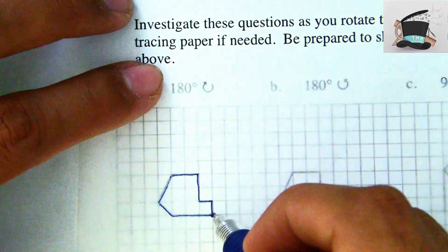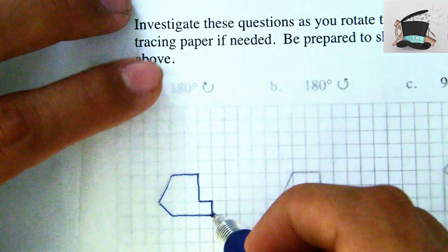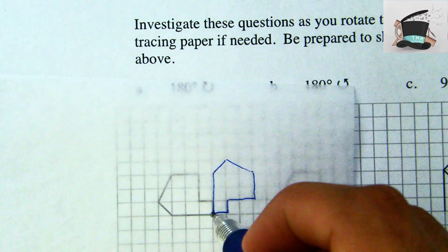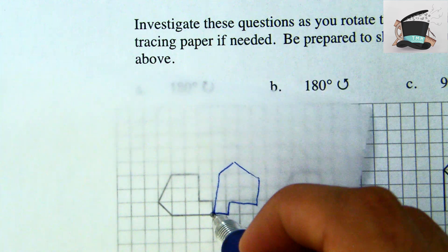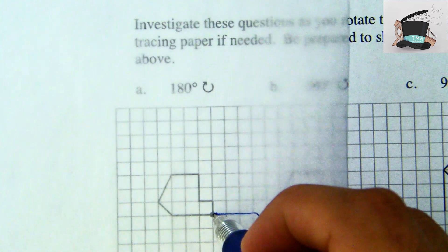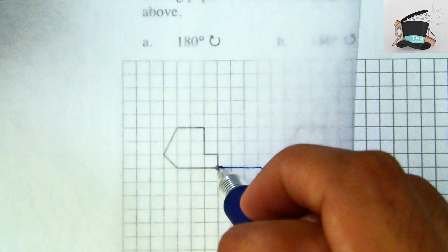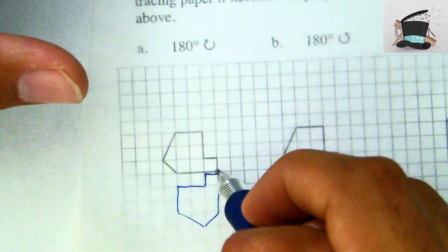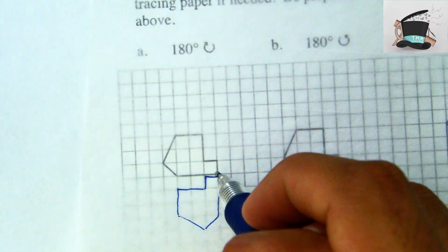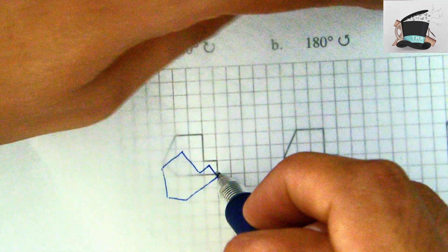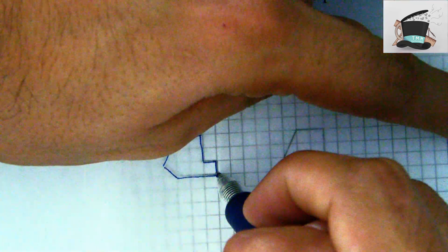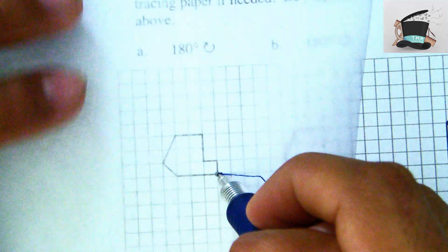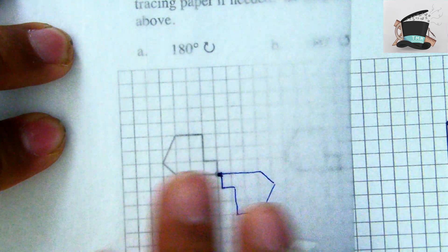Since it's 180 degrees clockwise, one turn brings me to 90 degrees, and then another turn brings me to 180 degrees. One more turn would be 270 degrees, and going all the way around would be 360 degrees. But we just want it at 180, so that's where my shape ends up.